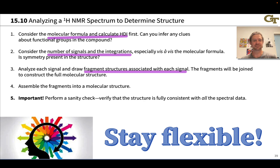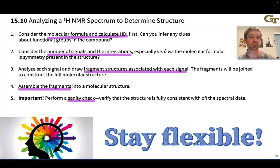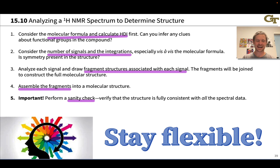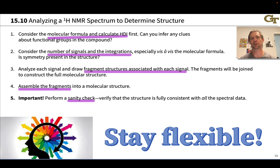Last but certainly not least, and a very important step after assembling the fragments, is to do a sanity check. Review your structure against all of the experimental data you have. The molecular formula — does it have the right number of hydrogens — is an important sanity check. All of the signals and splitting patterns should be consistent with your proposed molecular structure. If this doesn't happen, stay flexible: return to step 3 or step 2 and iterate. Eventually, you'll reach a point where you have a structure that is consistent with the proton NMR spectrum.